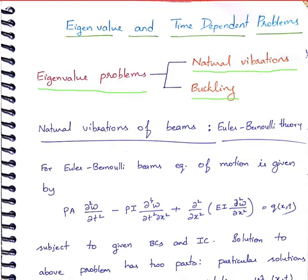We are really interested in vibrations. Any machine or structure that you create, you are always interested in the natural frequencies and the corresponding mode shapes. The second eigenvalue problem is buckling. Buckling is relevant for compressive loads — whether you are dealing with columns, shells, or sheet material, there is a real concern of structures undergoing buckling whenever they are subjected to compressive loads.